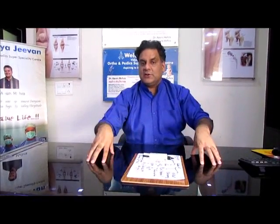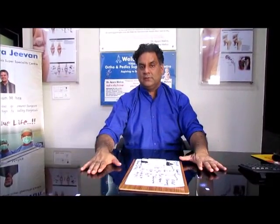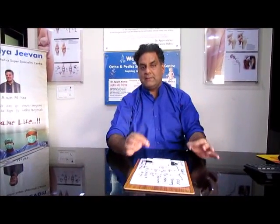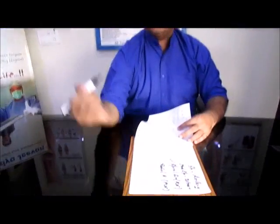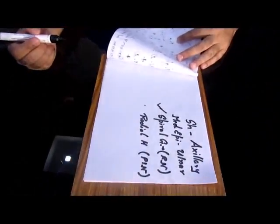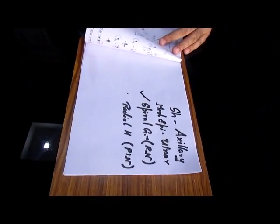But in Posterior Interosseous Nerve Palsy, in no scenario, we can have a wrist drop. So, in JIPMER MCQ, the answer that we have to opt for is the Radial Nerve. Because this explains the symptoms better.